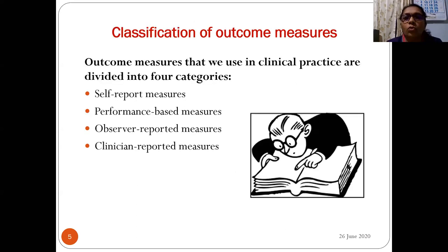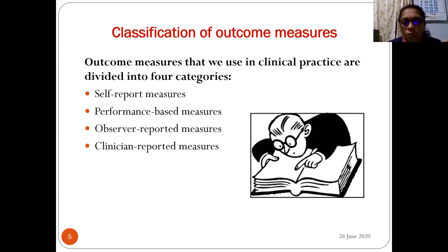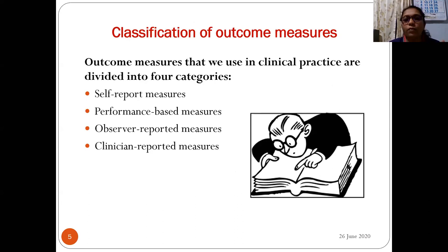Under outcome measures there are four types of classifications: first, self-reported measures; second, performance-based measures; third, observer-reported measures; and fourth, clinician-reported measures.